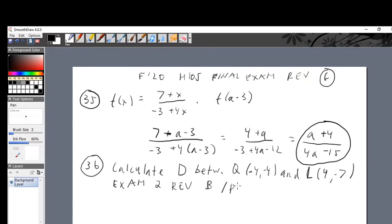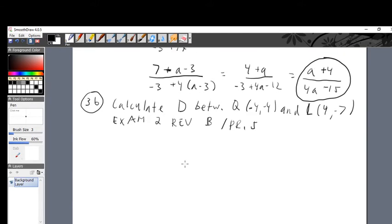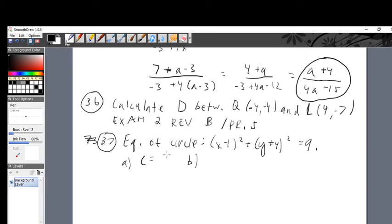Problem 37: the equation of a circle. Here you got it: (x-1)² + (y+4)² = 9. They want the center, that's part A, the coordinates of the center—an x-coordinate and y-coordinate you're going to get from here. And they want the radius, that's r squared, but you just take the square root of it.